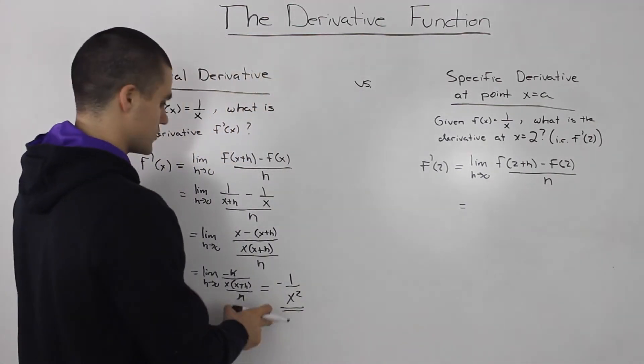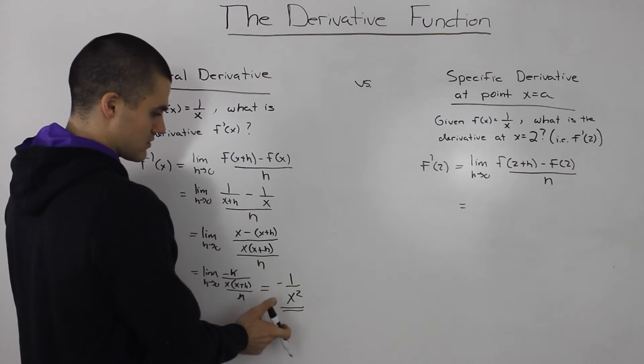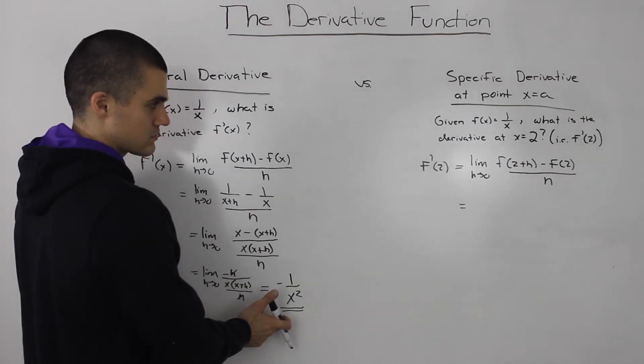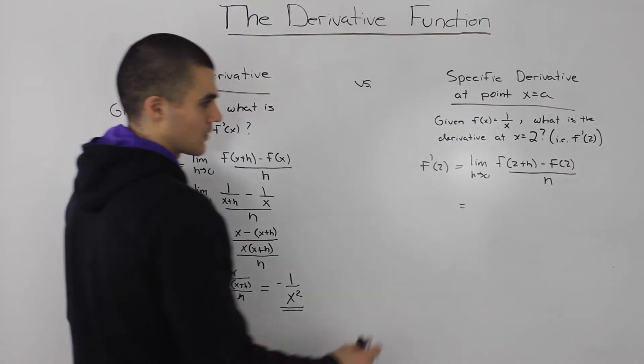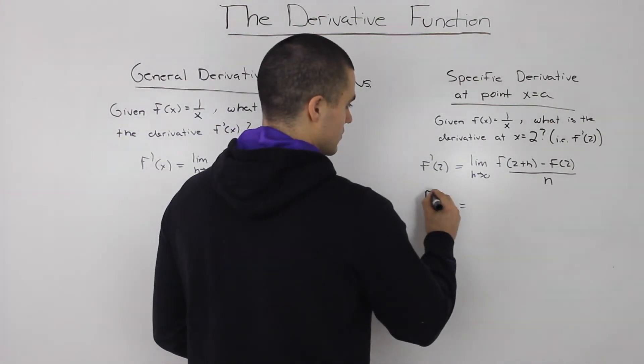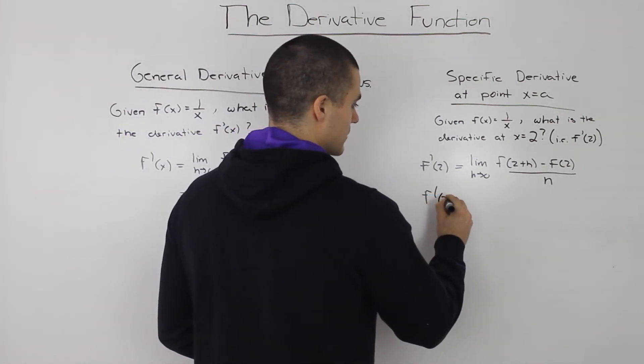Or what else you can do is you can just take the general derivative here that you found and you can plug in 2 for x, right? So you can also write f prime of 2.